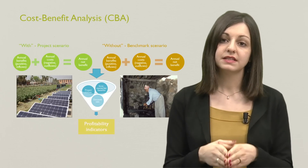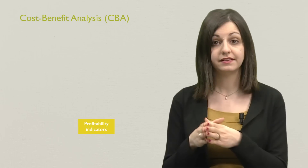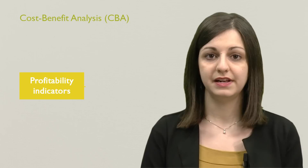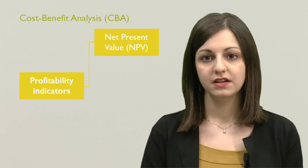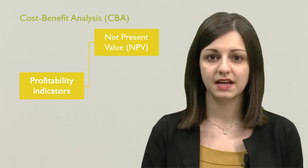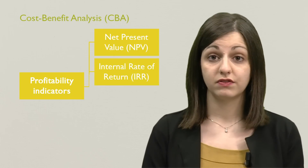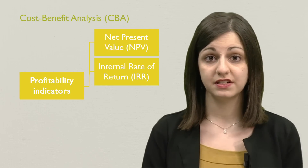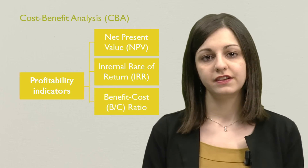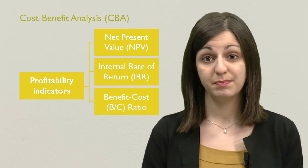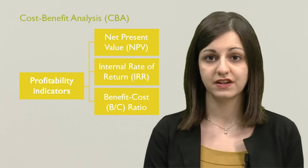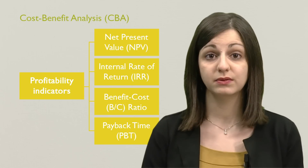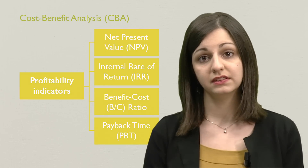With all these elements it is possible to calculate the corresponding project profitability indicators. In general, a cost-benefit analysis provides four main profitability indicators: the net present value (NPV), showing the monetary value of the project's net benefit over its lifetime; the internal rate of return (IRR), which is the discount rate at which the net present value of the costs equals the net present value of the benefits; the benefit-cost ratio, the ratio between discounted benefits and discounted total costs associated with the energy intervention; and the payback time, which indicates the number of years required for the discounted sum of benefits to equal the discounted investment costs.